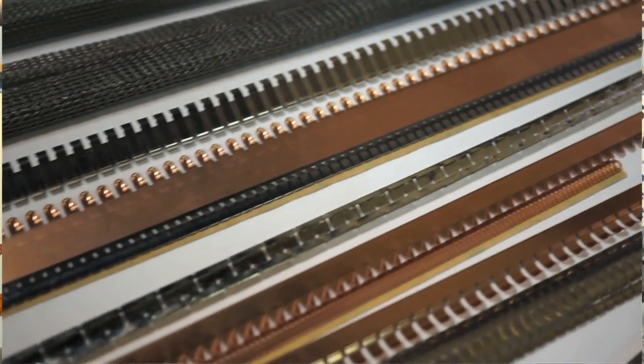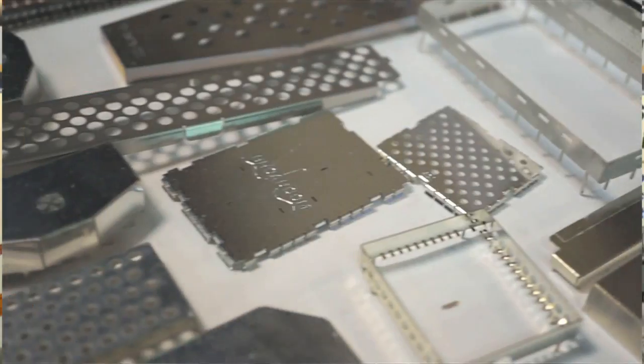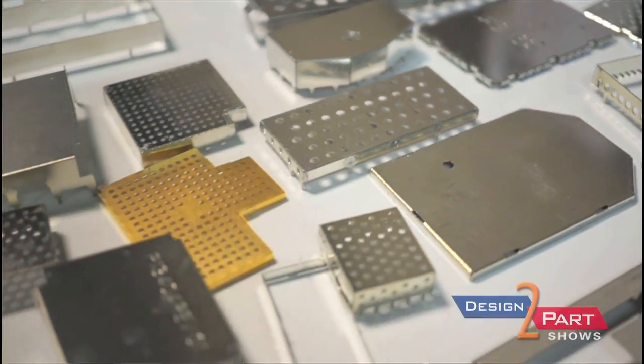We also manufacture flexible circuitry, and we have a standard catalog product line of EMI and RFI shielding solutions. We can etch metals down to five ten thousandths of an inch thick.